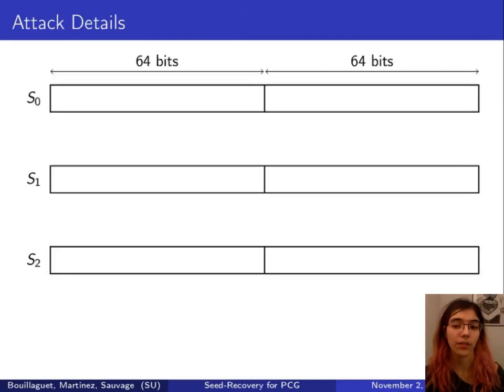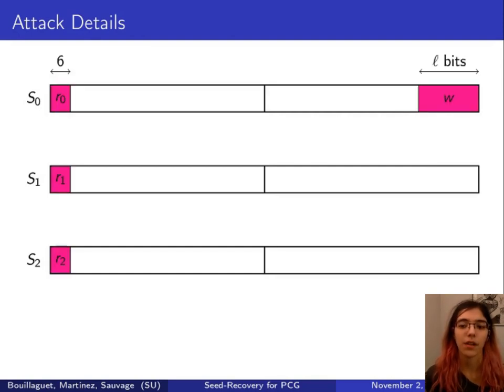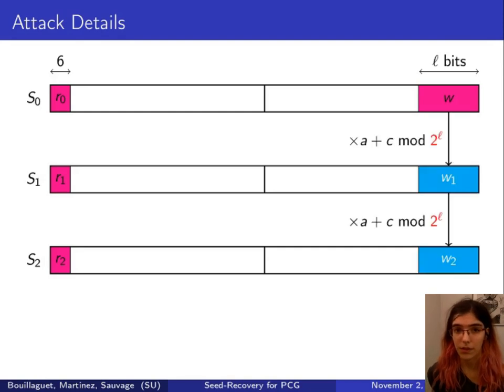Here are the details of the attack. We consider some consecutive states, three in the case where C is known, and we will guess the L least significant bits of the first internal state. This will reveal all the least significant bits of all the following states, because the modulus is a power of 2.